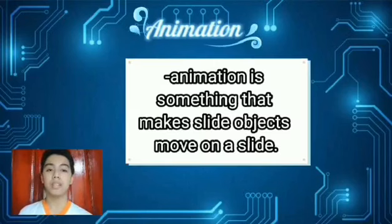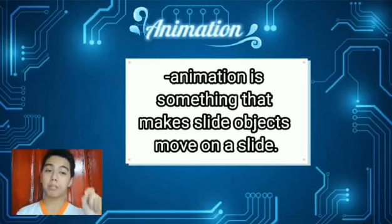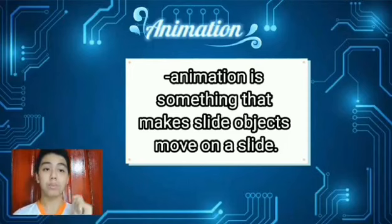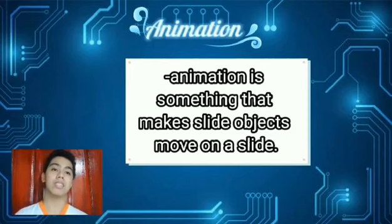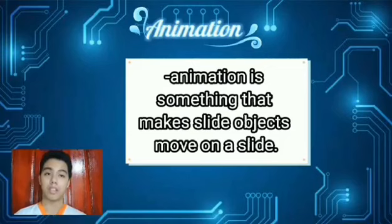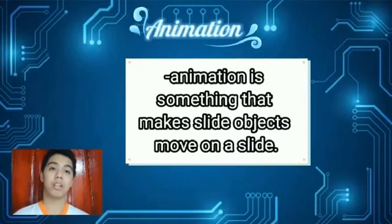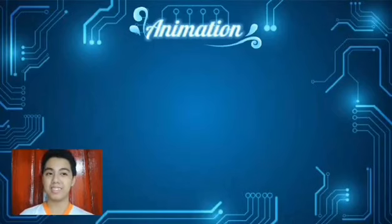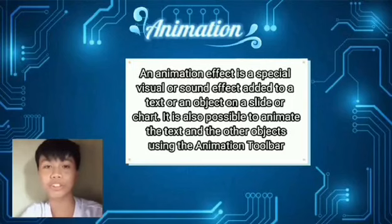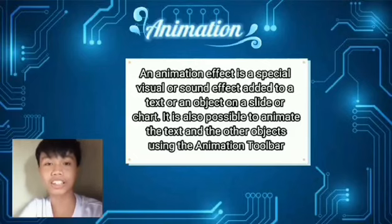Animation, in the simplest sense, is something that makes slides, objects, or elements move. A slide object can be anything on a slide. This includes text, pictures, chart, smart art, graphics, shapes, and even movie clips. An animation effect is especially a visual or sound effect added to a text or an object, slide, or a chart. It is also possible to animate the text and other objects using the buttons of the animation effects toolbar.